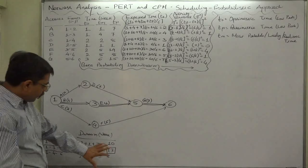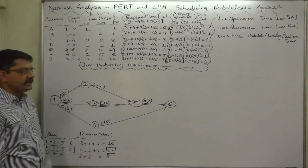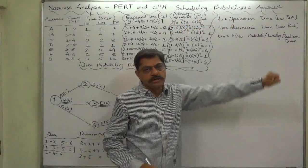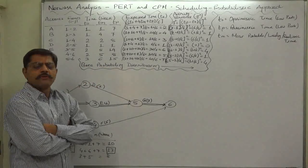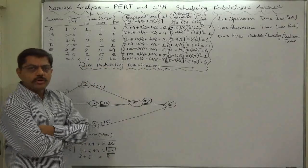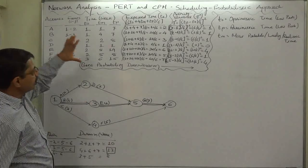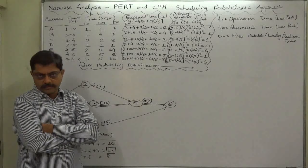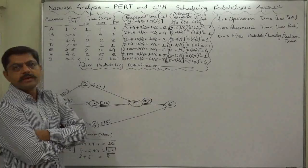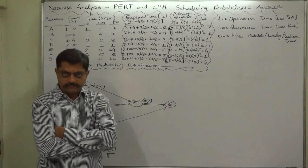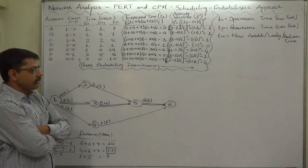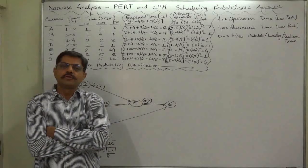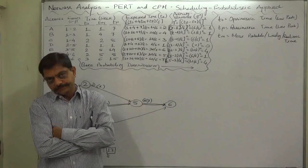Now on the basis of all these critical path, critical activities, etc., we can go for further calculations regarding scheduling, particularly probabilistic approach. For that purpose we need to assume that the total duration of the project follows the normal distribution, and we know that normal distribution means bell-shaped curve.